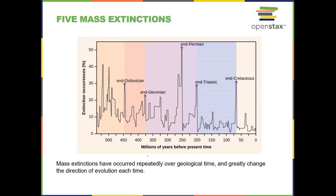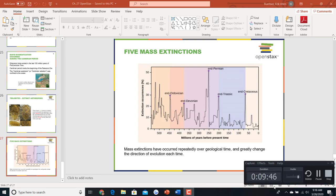The two mass extinctions you really need to know are the end-Permian extinction, which marks the end of the Paleozoic era, and the end-Cretaceous extinction, which marks the end of the Mesozoic era. Together with three others, these are considered the five mass extinctions that very quickly changed the makeup of life forms on Earth. That's the end of this lecture and the end of Chapter 27.